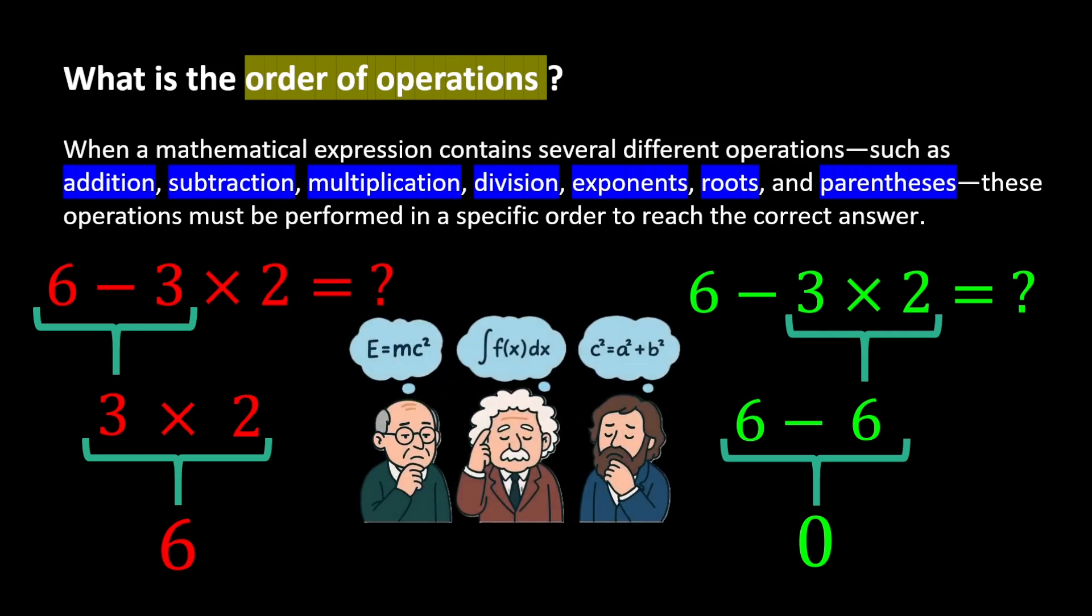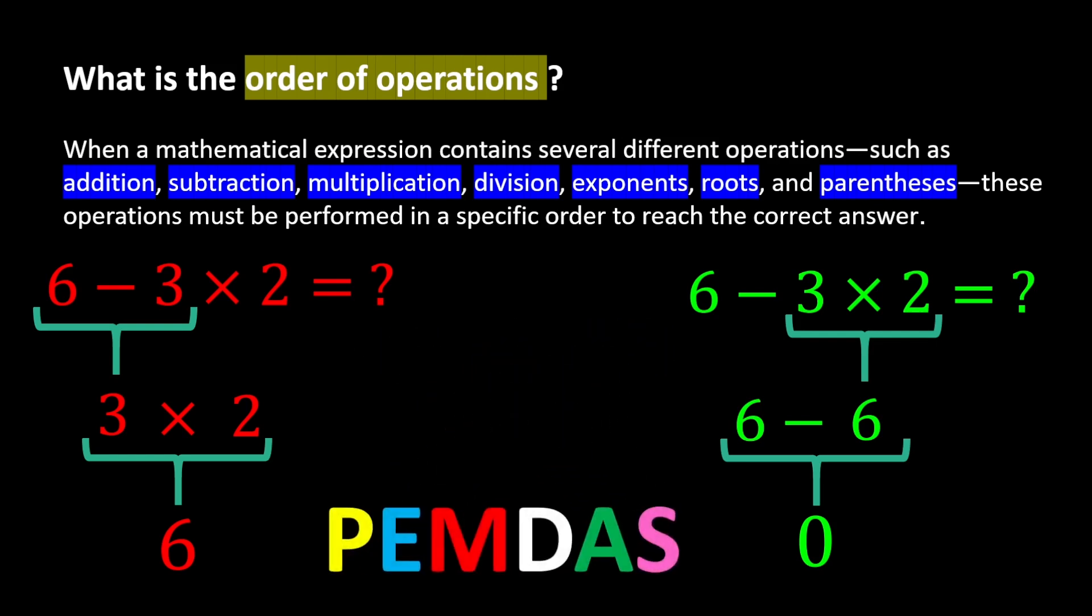To prevent disorder in mathematics, scientists long ago agreed on a universal rule for the correct order of operations. This correct order of operations is known by a short and concise expression called PEMDAS, and each letter in the word PEMDAS stands for a specific step.